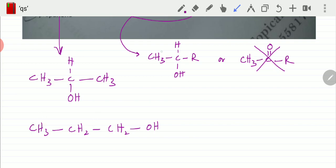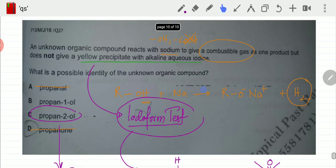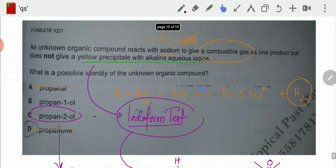It has to be CH3 right next to this structure, which is only present in propan-2-ol. It's going to give a yellow precipitate of triiodomethane. So option C is your correct option for this particular question.